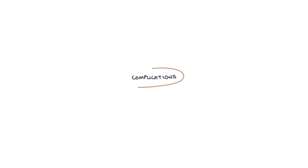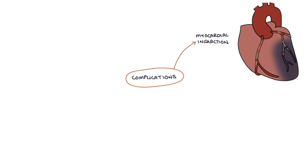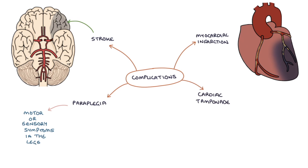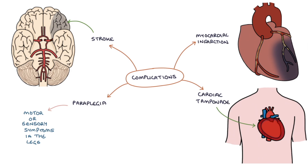Finally, let's talk about the complications. There is a long list of complications of aortic dissection. Some of the key ones to remember are myocardial infarction, stroke, paraplegia with motor or sensory impairment in the legs, cardiac tamponade, aortic valve regurgitation, and death.